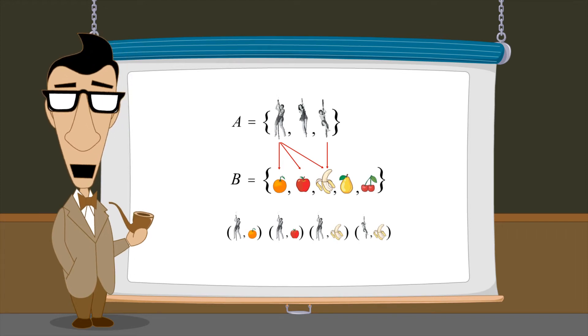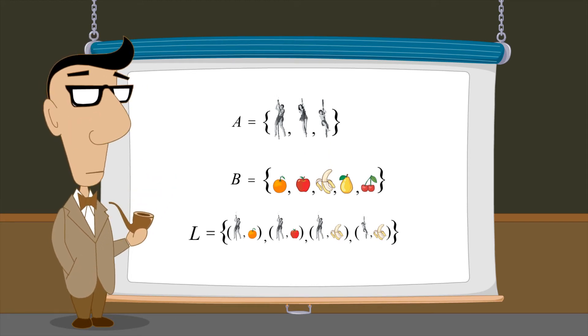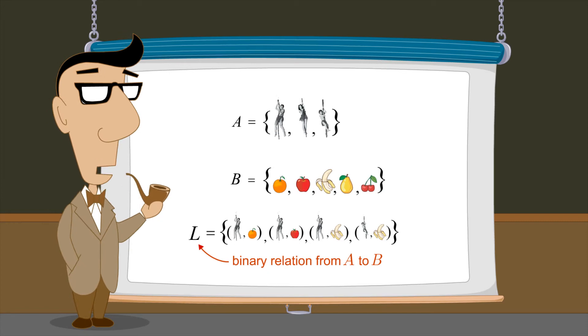Let's name a set containing these ordered pairs set L. So L represents a binary relation from A to B.